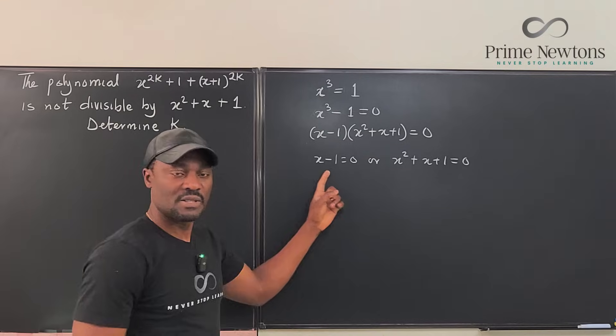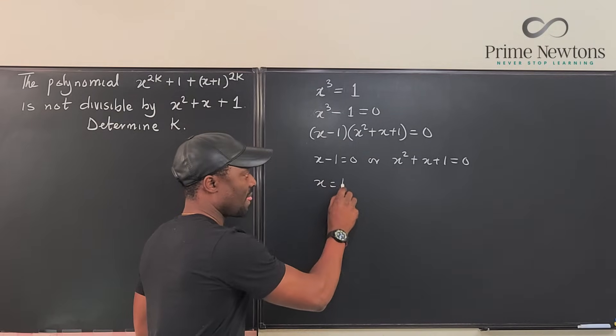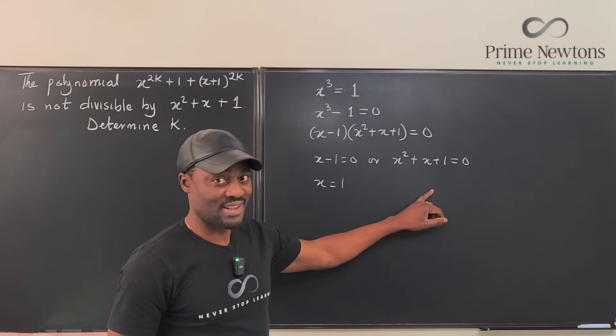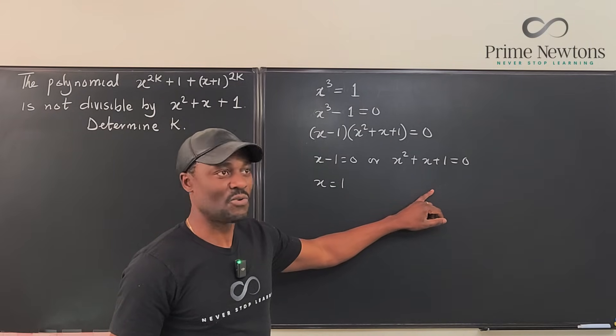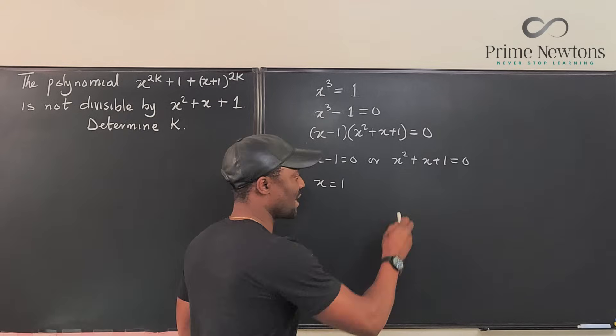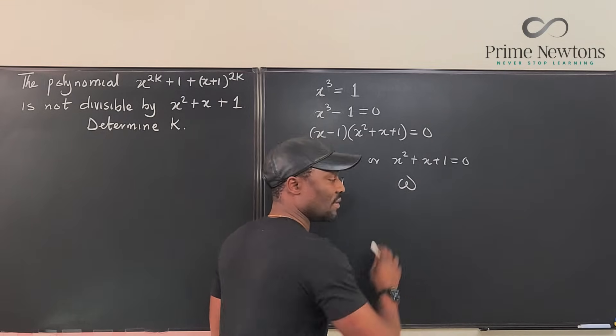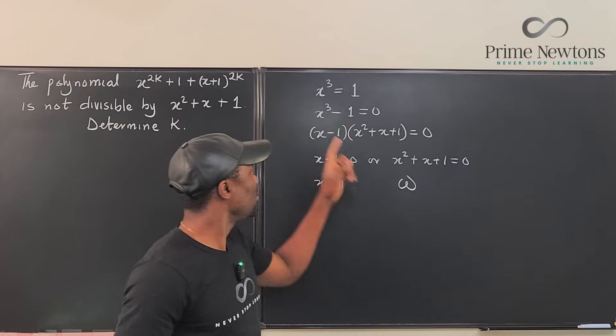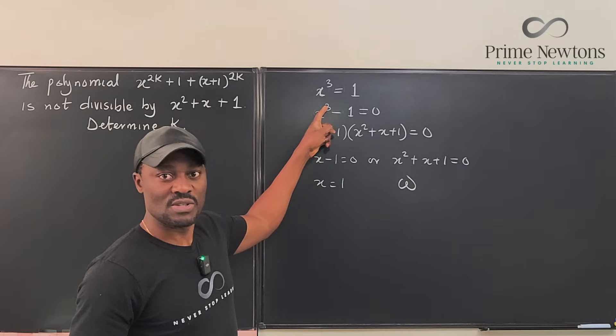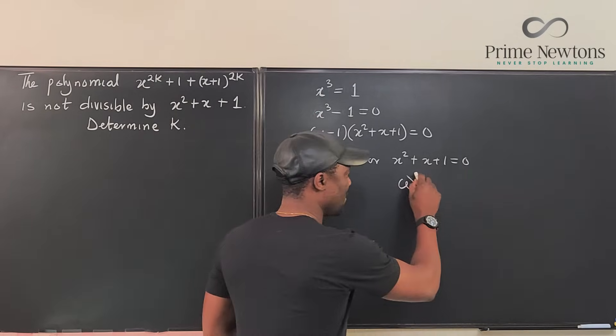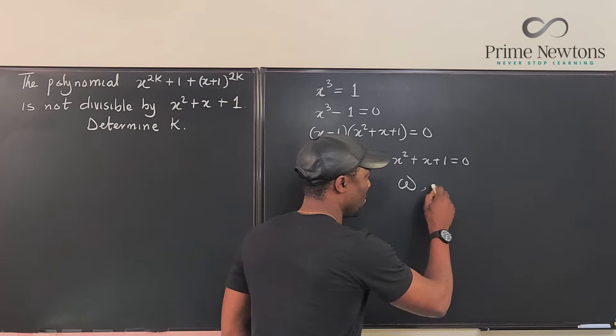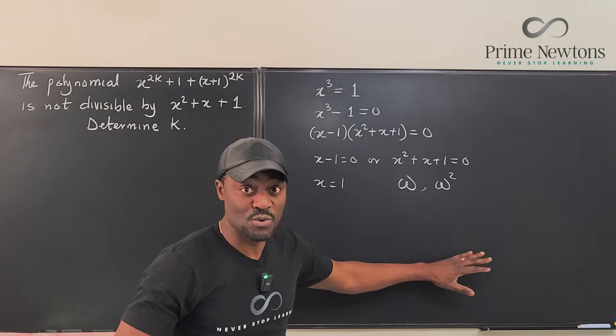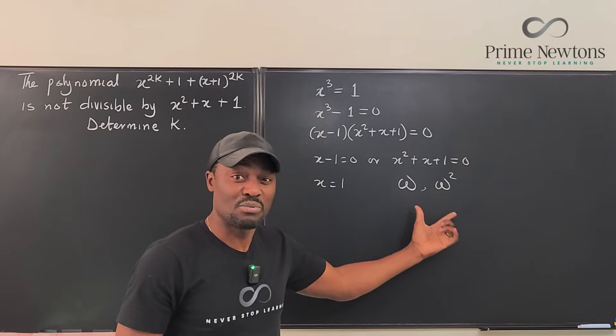Using the zero product property, this gives us x equals 1, x minus 1 equals 0, or x squared plus x plus 1 equals 0. When you solve this, you get x equals 1. When you solve this, you're gonna get two unique answers. Very unique answers, or amazing answers, because that's what we call the cube root. Since we know omega is a root of x squared plus x plus 1, we're not gonna write the actual numerical value, we just need the properties.